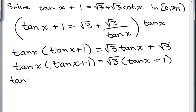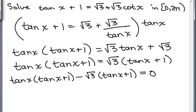So I have tan x times tan x plus 1 minus, this is like a whole big term, minus the √3, tan x plus 1. I'm taking that whole term and setting it equal to 0.